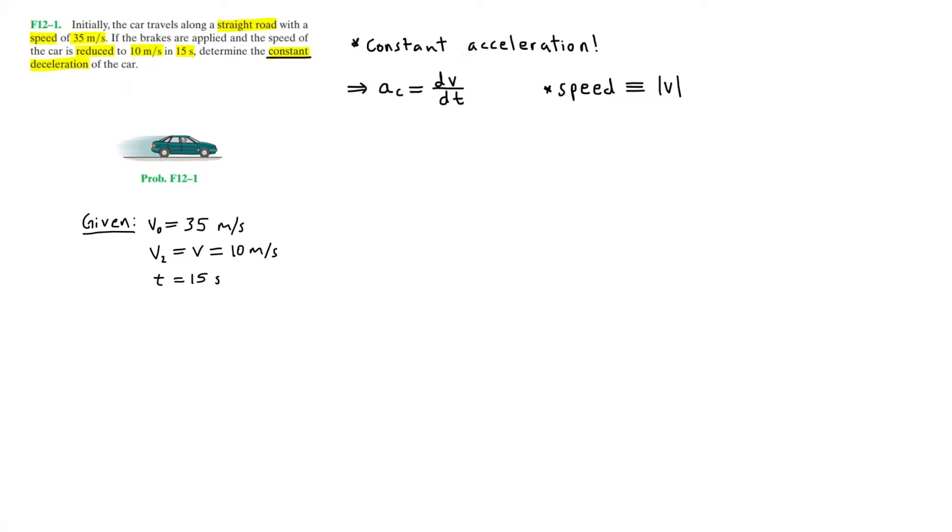Now the next thing we want to do is write velocity as a function of time. To do that, we want to integrate our acceleration, since that is taking the antiderivative of DV by DT, which will essentially give us velocity. Now for the first equation, we want to separate DV and DT. So I will isolate DV in order to integrate. So we have DV equals A sub C times DT, and now we're ready to integrate.